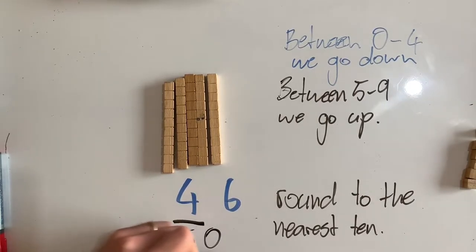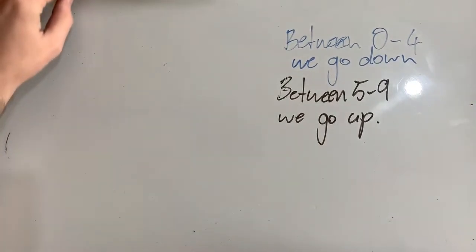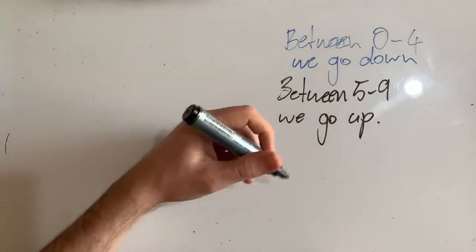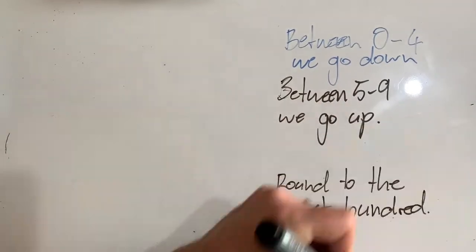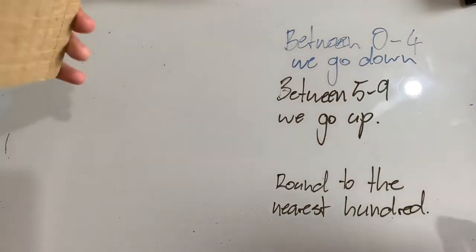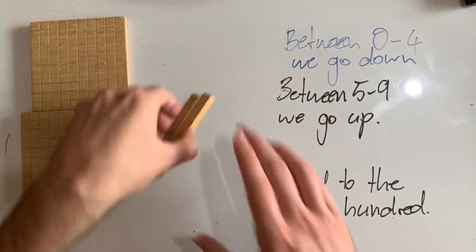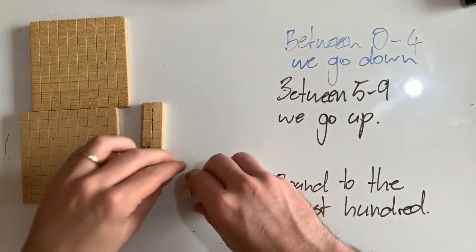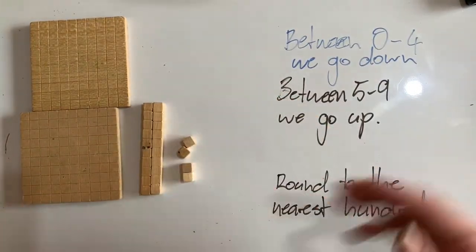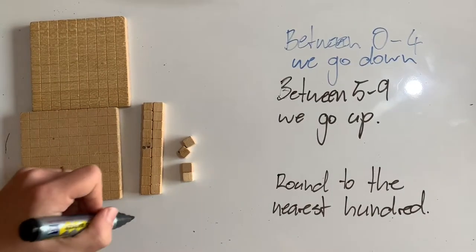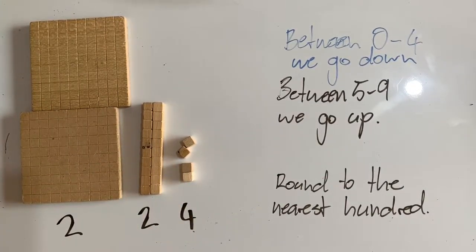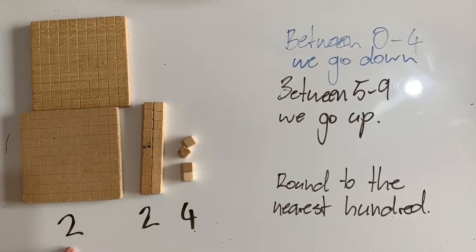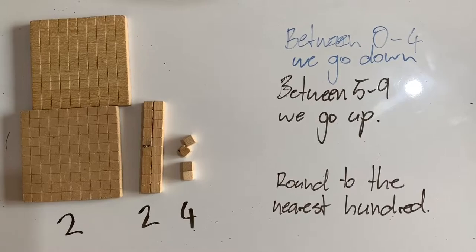So 50 is our rounded number. Let's try something a little bit different. This time I want to round to the nearest hundred, and I'm going to have 224. So I've got 200s, two tens and four units, and I want to round to the nearest hundred. So I'm going to be deciding if I keep this two in the hundreds column or change that to a three.